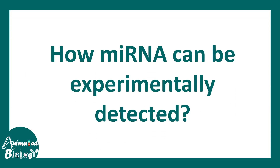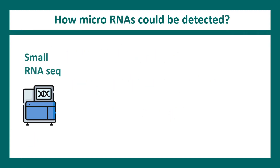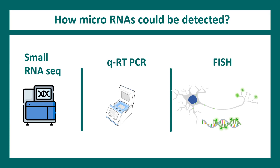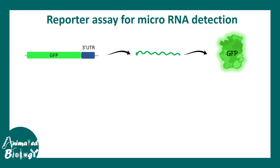How can microRNAs be experimentally detected? There are several ways. One approach is small RNA sequencing. Another is quantitative real-time PCR, which can detect microRNAs. Fluorescence in-situ hybridization (FISH) can detect the in-situ localization of microRNA — not only how many microRNAs are present, but also their physical localization. There is also a reporter assay that can assess gene expression regulation by microRNA.